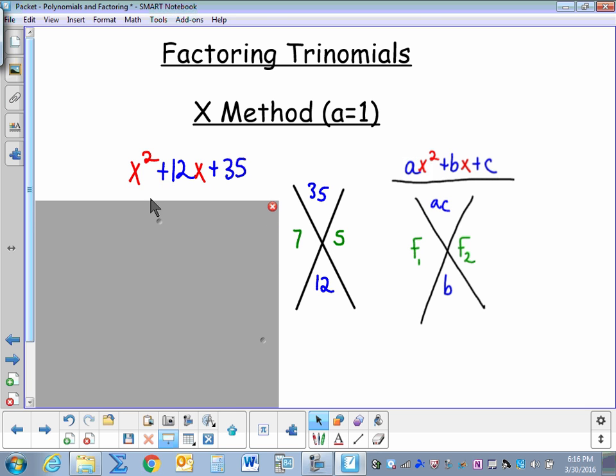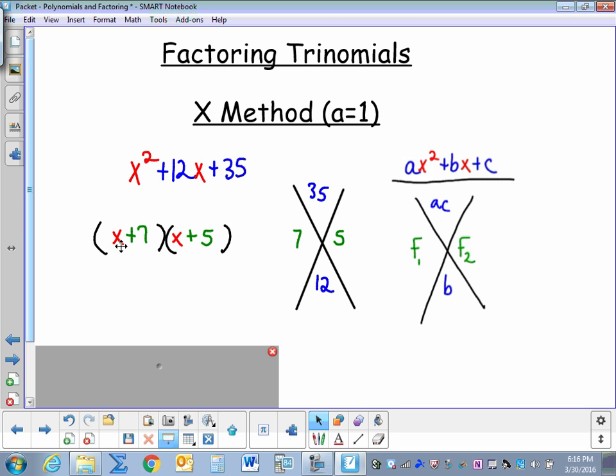And since this has a leading coefficient of 1, I'm going to start factoring here. So I know I'm going to have two binomials. And in order to get the first term, to get x squared, the only possible combination I can have is x times x. And now that I have these two factors, I'll just put those in, plus 7 and plus 5. And now when I FOIL or multiply these two binomials together, I'll end up with the trinomial I started with. So that's how we'll be factoring trinomials today.